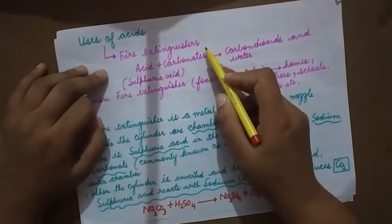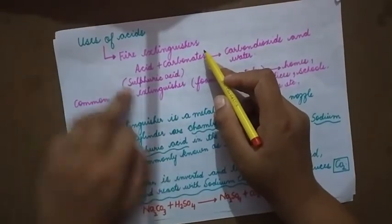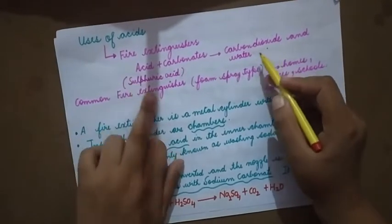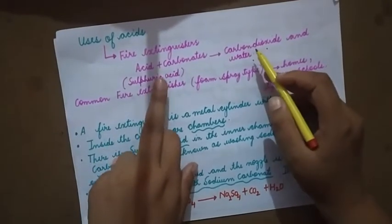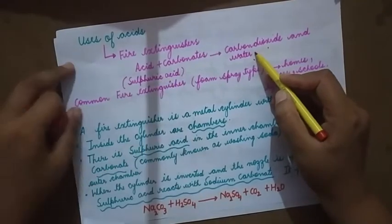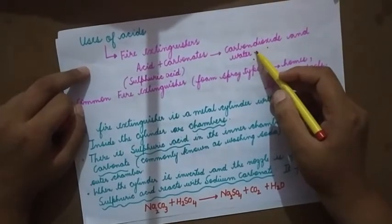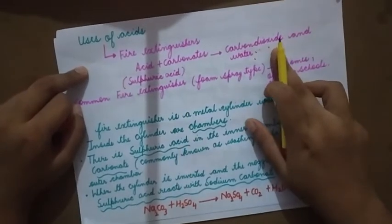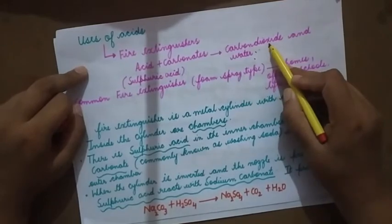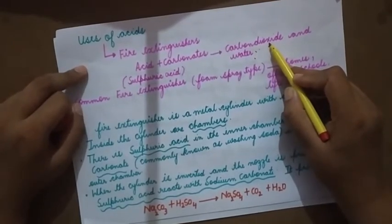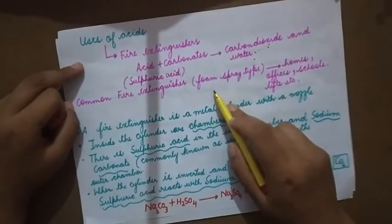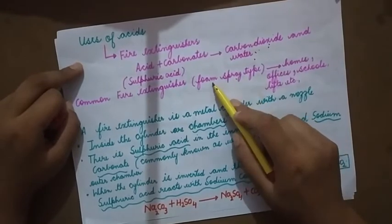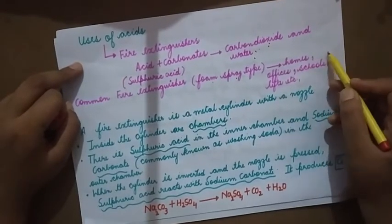Uses of acids. Acids are used in fire extinguishers. When acid reacts with carbonates, it gives rise to carbon dioxide and water. This reaction is used in fire extinguishers. A common fire extinguisher is the foam spray type, which produces foam that can be sprayed, and is used in homes, offices, schools, lifts, etc.